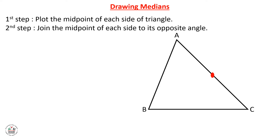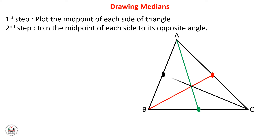So the midpoint of AC, we plot it, and we join a line from this point to the opposite angle of this side, which is angle B. Again, we plot the midpoint of side BC, and we join this midpoint with the opposite vertex of this side. And we do the same for the last side.